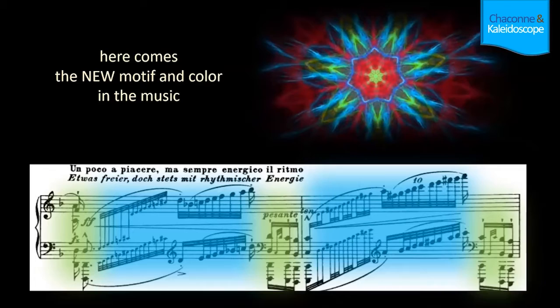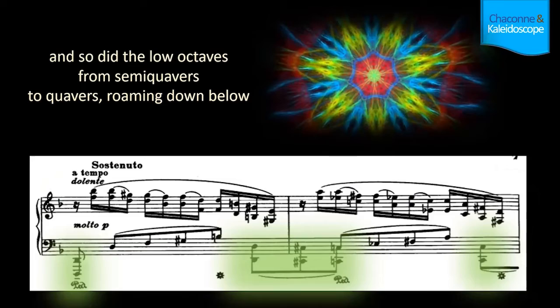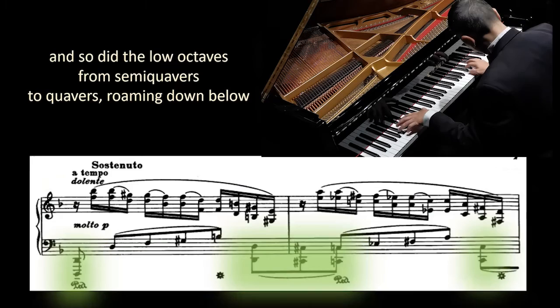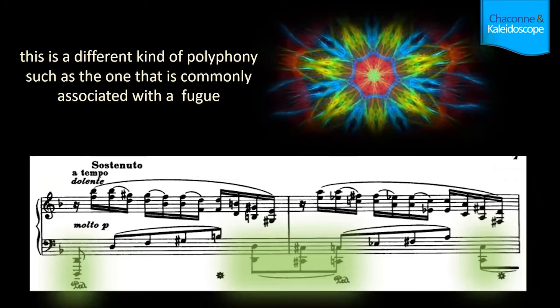Here comes the new motif and color in the music. The green color is expanding now, and so did the low octaves from semi-quavers to quavers roaming down below. This series of changing patterns and colors continues throughout the entire Chaconne. This is a different kind of polyphony, such as the one commonly associated with a fugue.